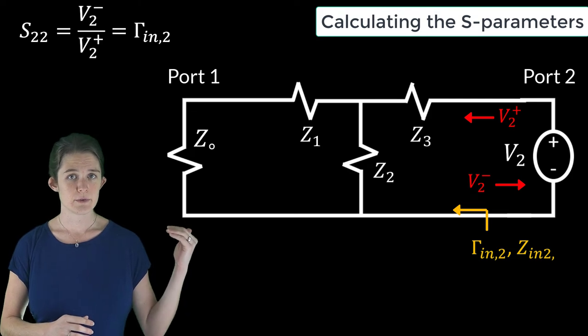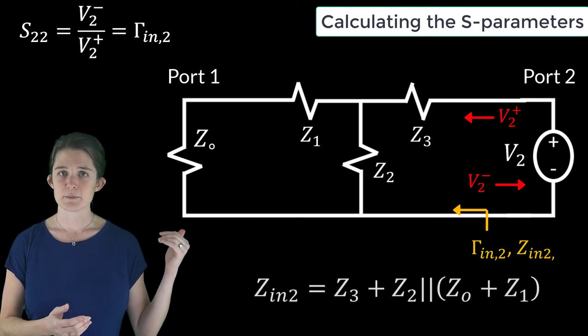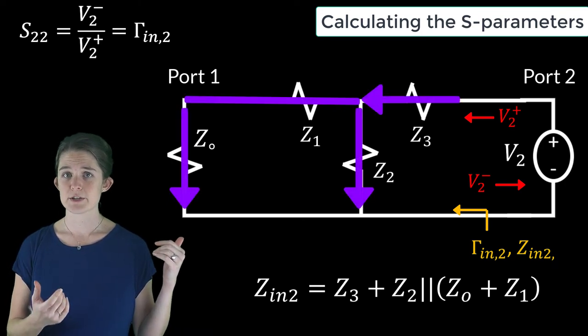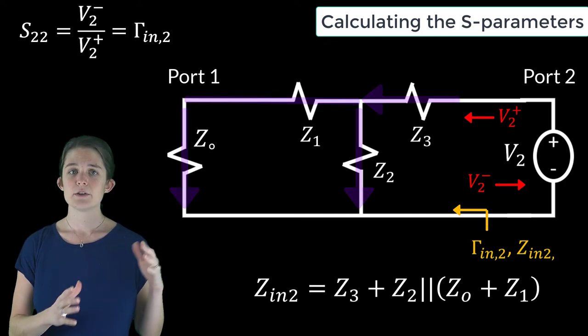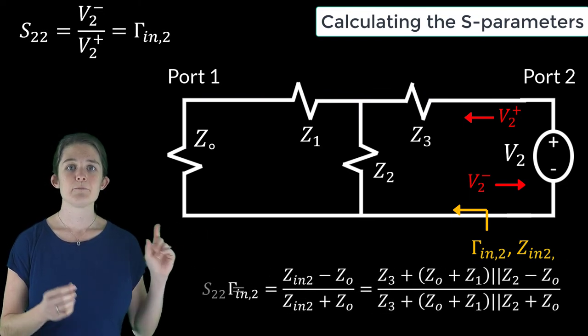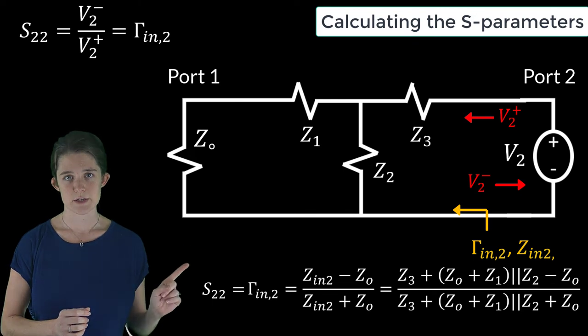So we start by finding the input impedance looking into port 2, which is Z3 plus Z2 in parallel with the combination of Z0 and Z1. So the reflection coefficient looking into port 2 is given by this equation, and S22 is equal to this reflection coefficient.